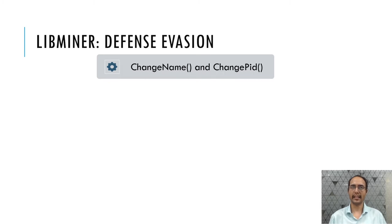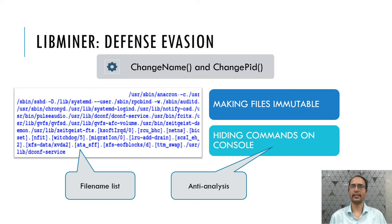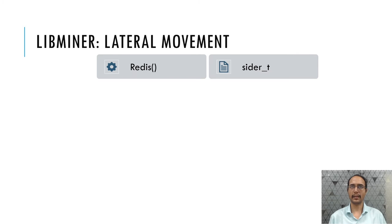For evading detection and disguising execution, LibMiner uses two functions. The change-PID function forks a child process and exits the parent process, executing with a changed PID. For change-name, it has a predefined list of filenames belonging to the operating system; it modifies the first argument from the arguments array and modifies the name of the executing binary. It also uses anti-analysis techniques where it makes a file immutable — making it difficult to rename, modify, or delete the file — and typed commands on the terminal are hidden.